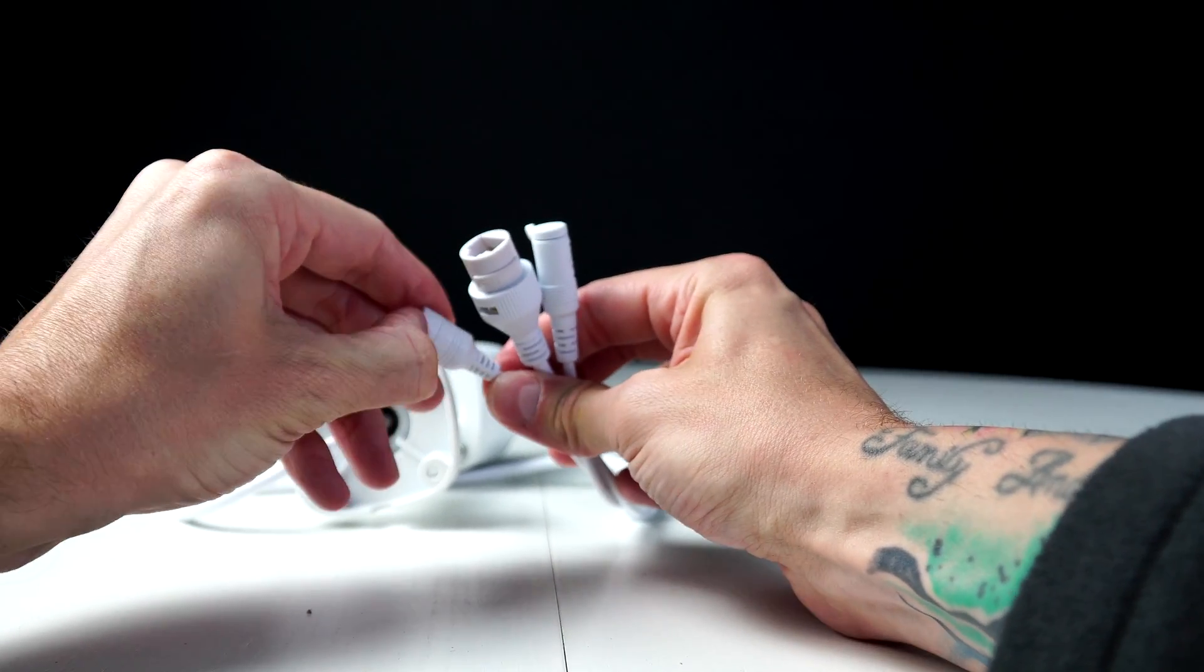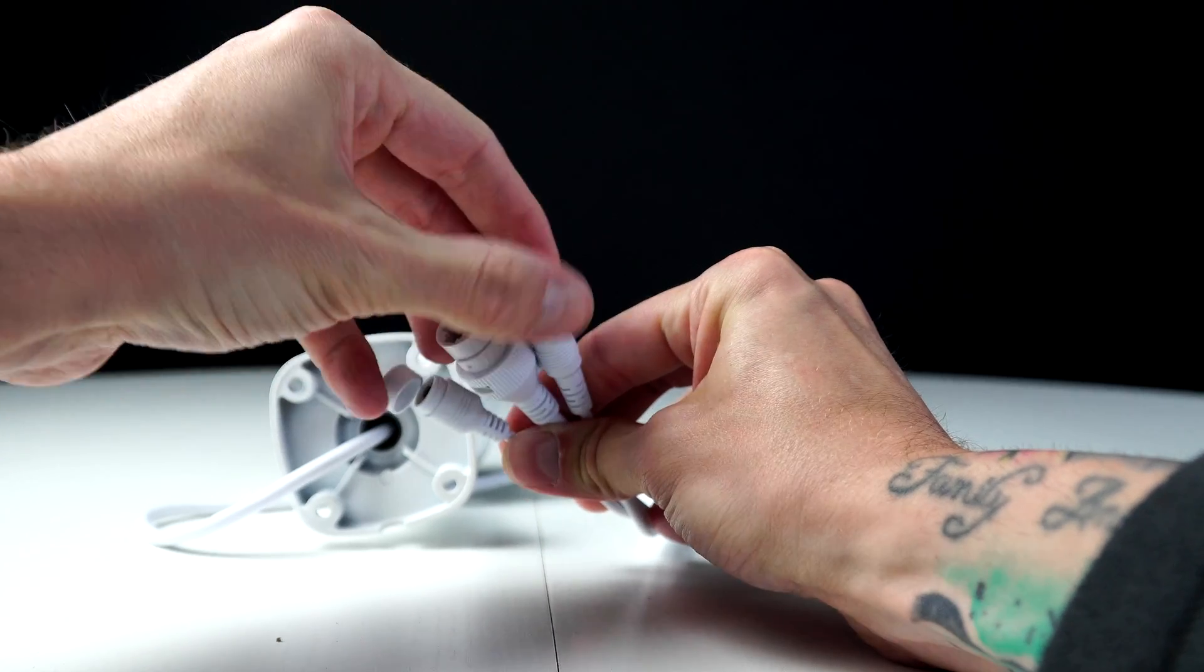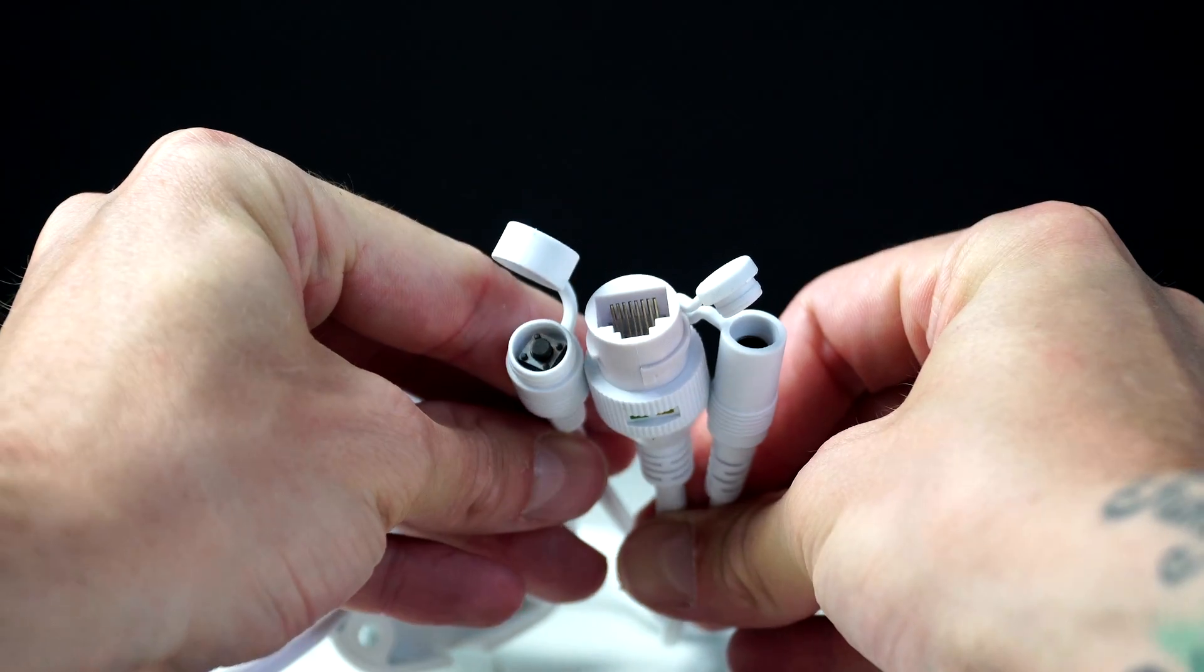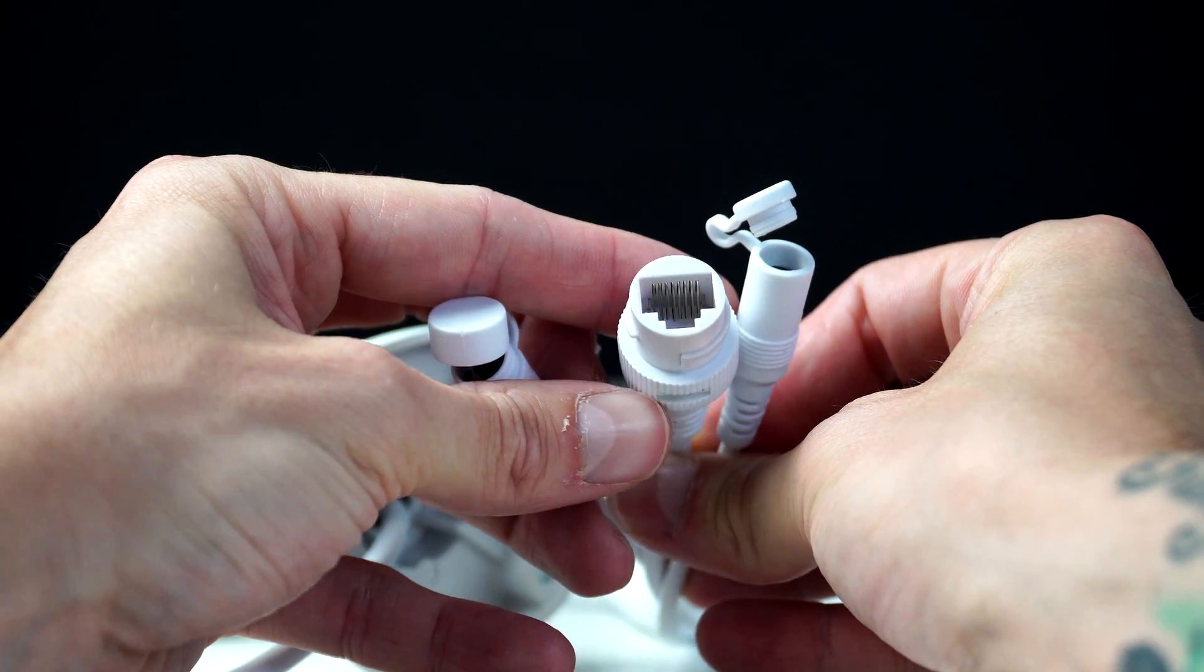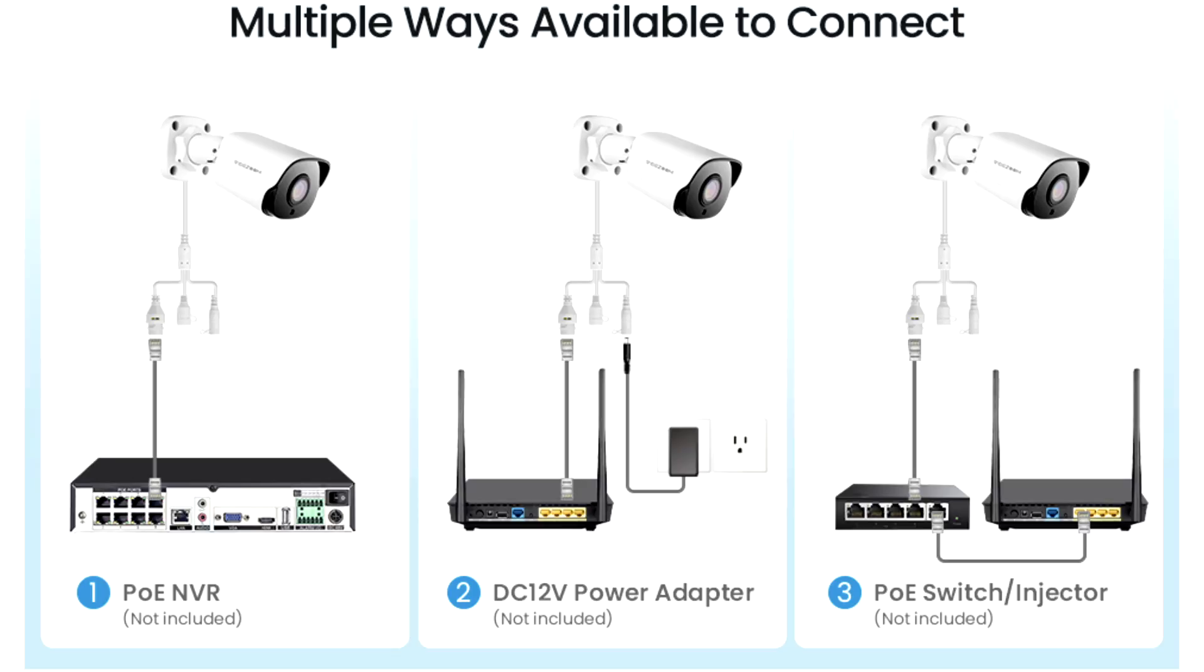Now on the end of each cable, the cable splits into three. You have a reset button, the RJ45 Ethernet port, and on the right side, we have the option to add a power lead.